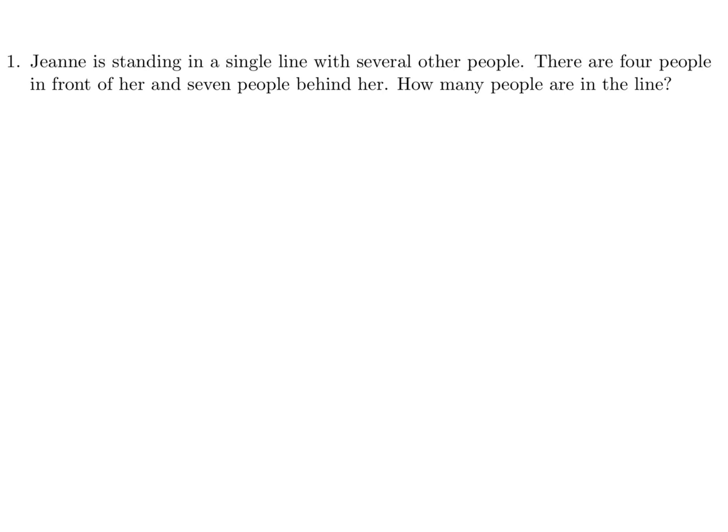Gene is standing in a single line with several other people. There are four people in front of her and seven people behind her. How many people are in the line? So this is Gene. In front of her you have four people, behind her you have seven people. So in total we have seven plus Gene plus four. If you add that up, it's twelve people in total.